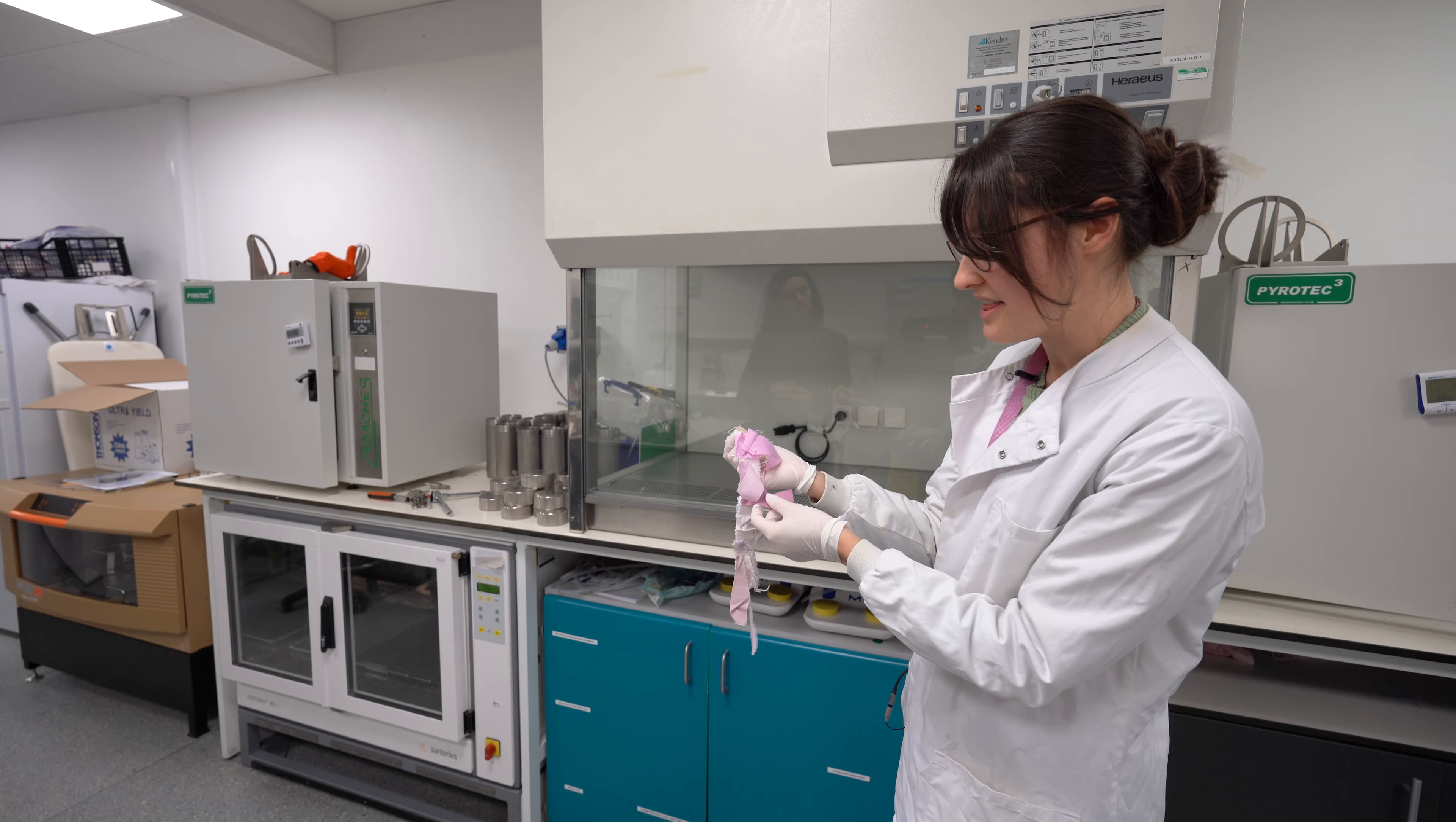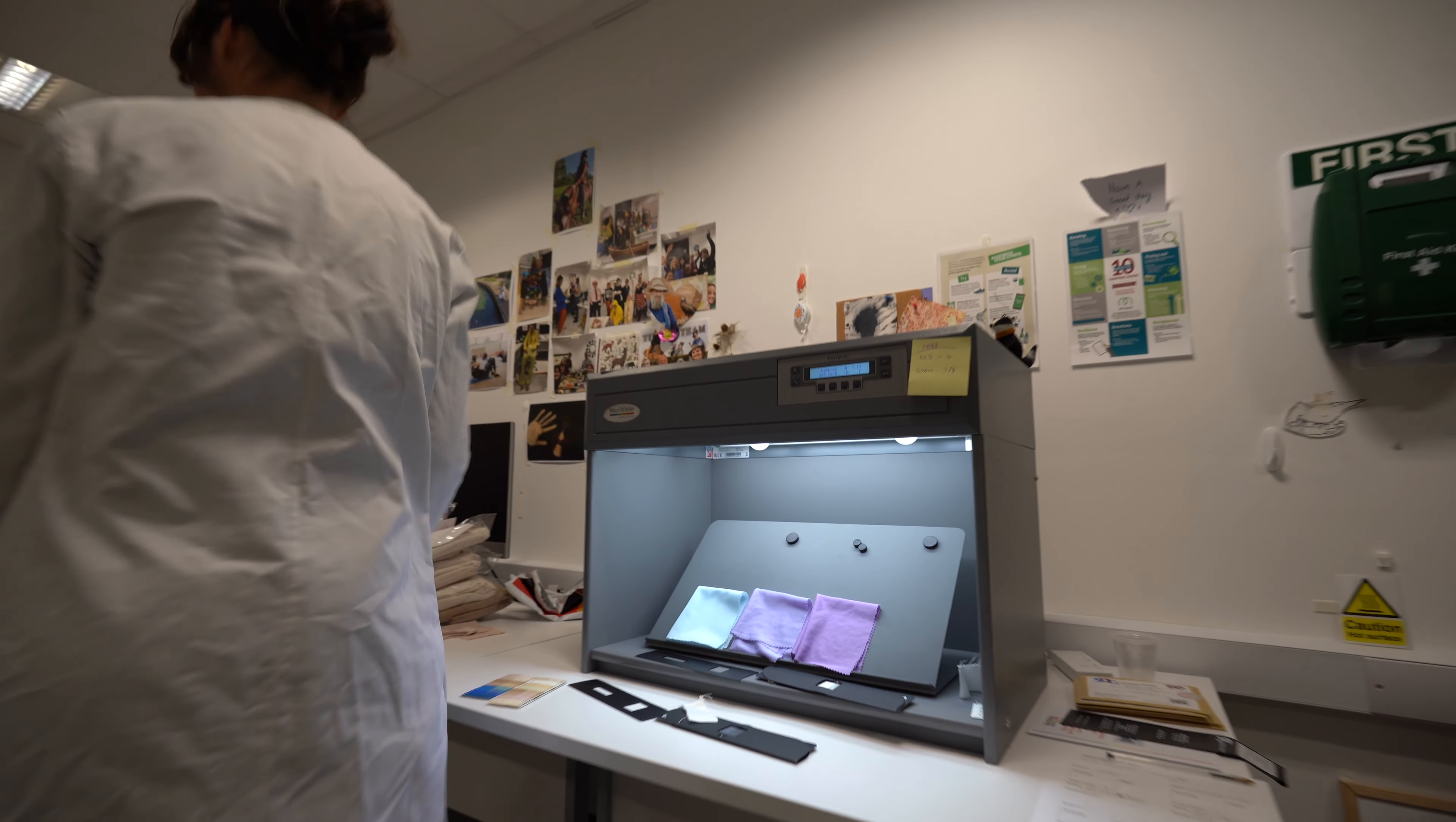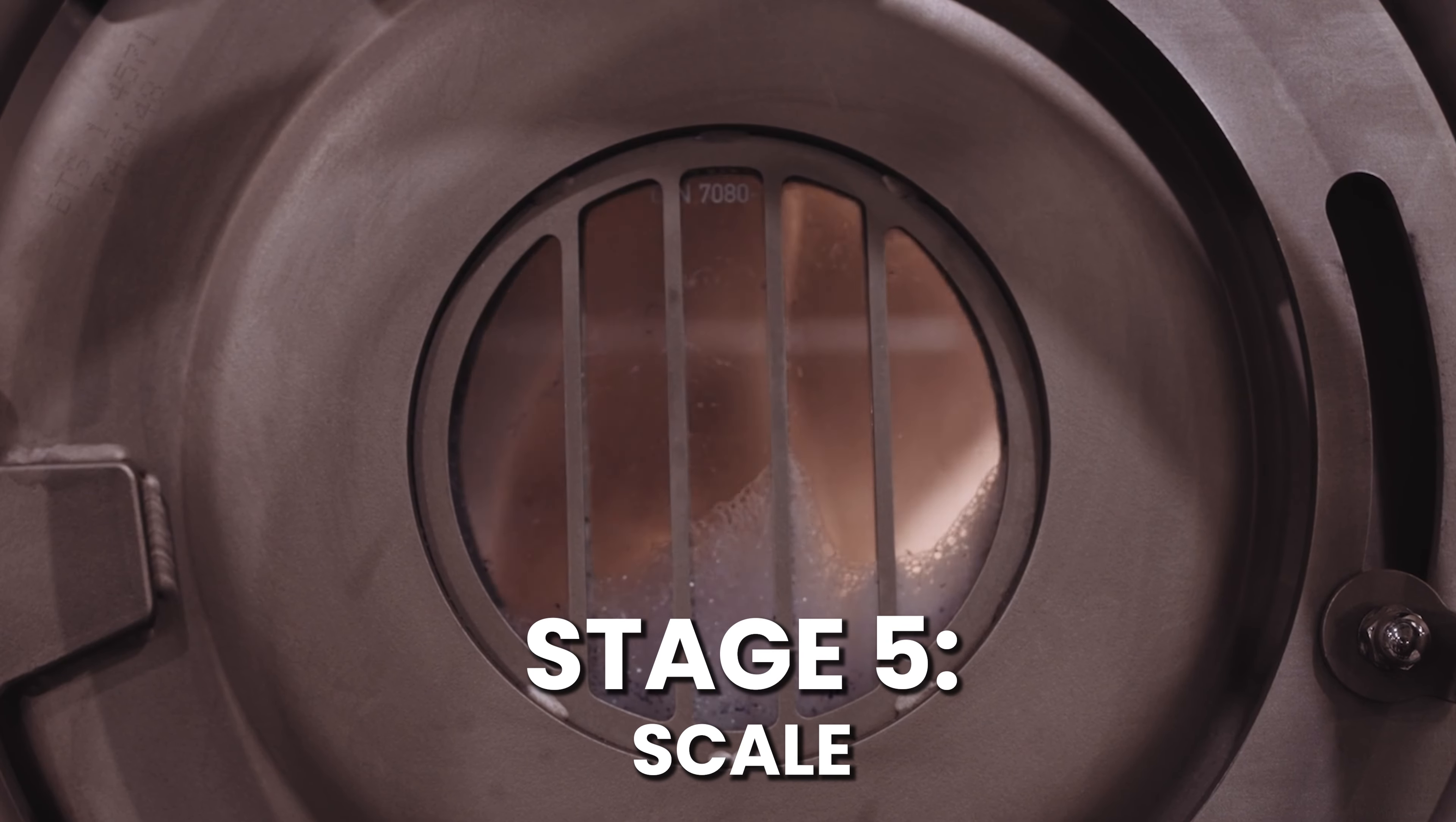She also showed us the different types of testing required to ensure the colors in the fabrics don't fade in the wash, in sunlight, or when rubbed against other fabrics or materials. Once the pigment from a type of microbe has been approved, it is shipped directly to dye houses where they can be scaled in huge fermentation tanks.